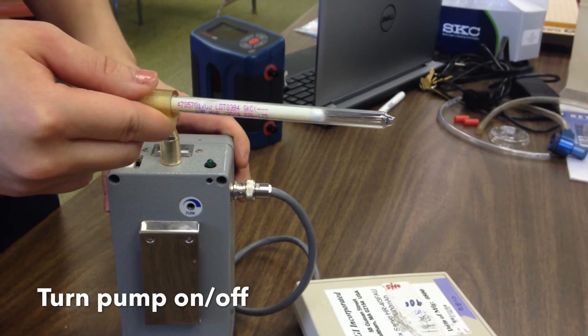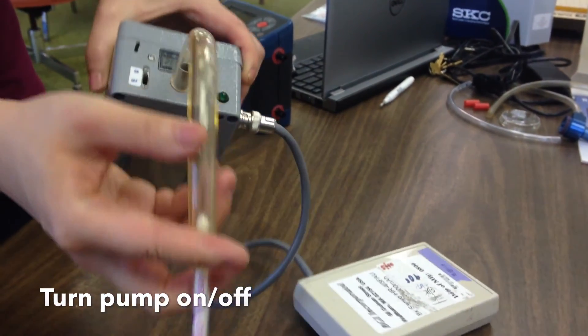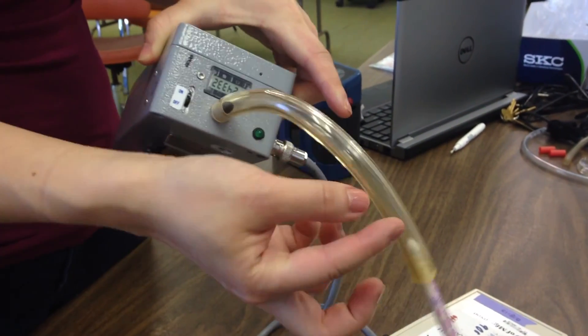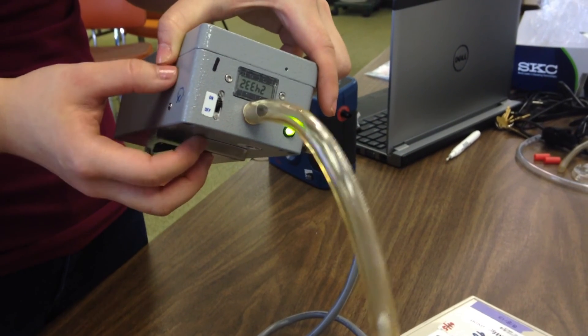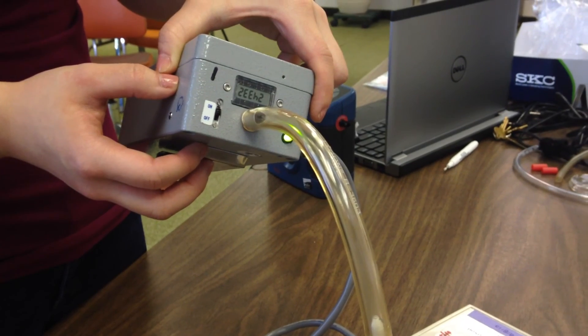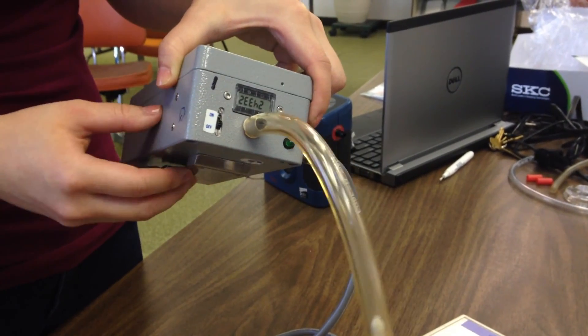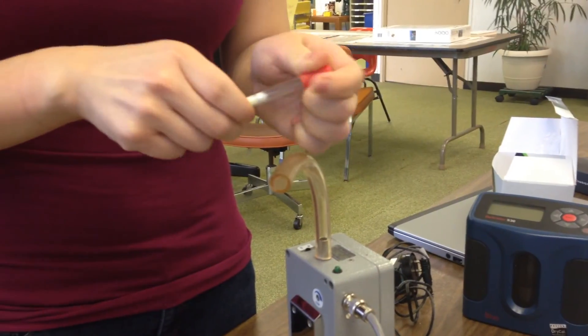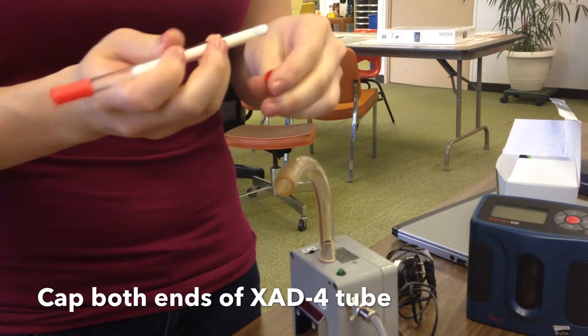In order to begin sampling, both ends of the XAD4 tube must be broken with the arrow pointing inwards towards the pump. Switch the pump on to begin sampling and switch it off to end it. After sampling has ended, cap both ends of the XAD4 tube.